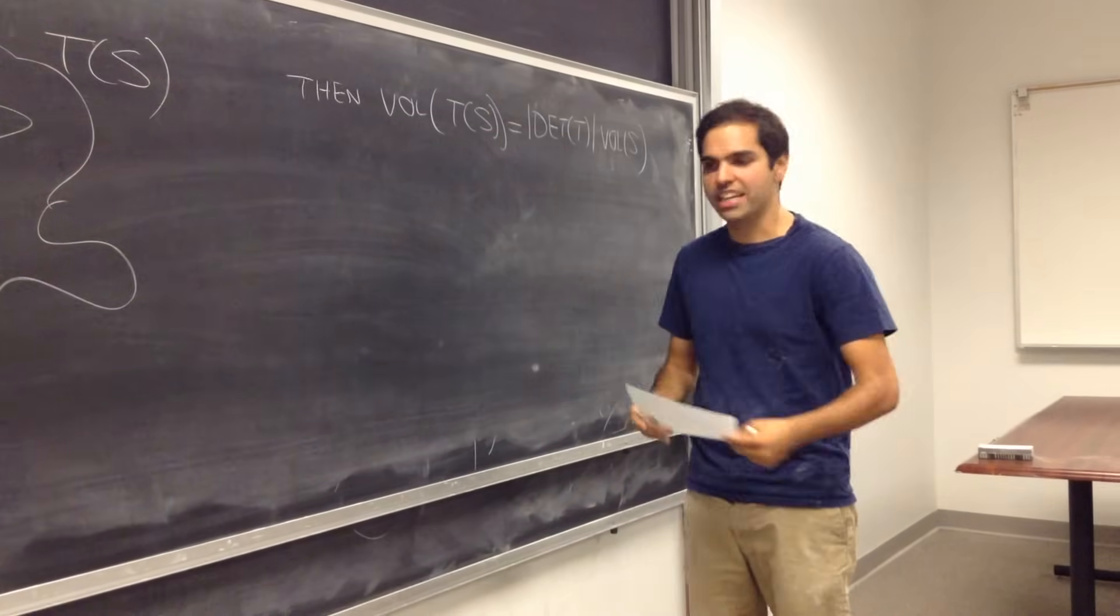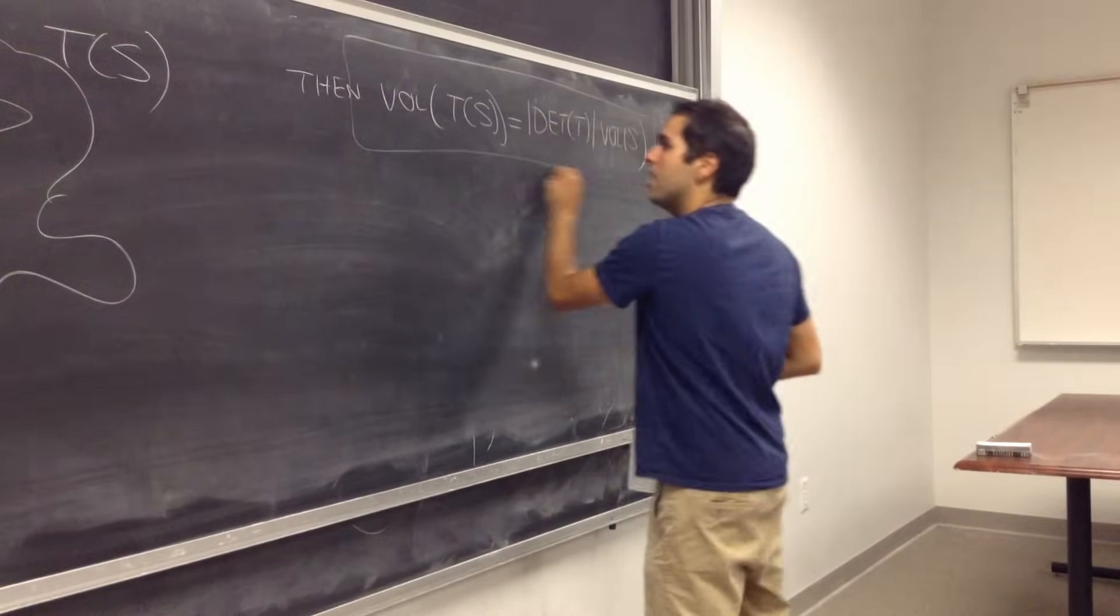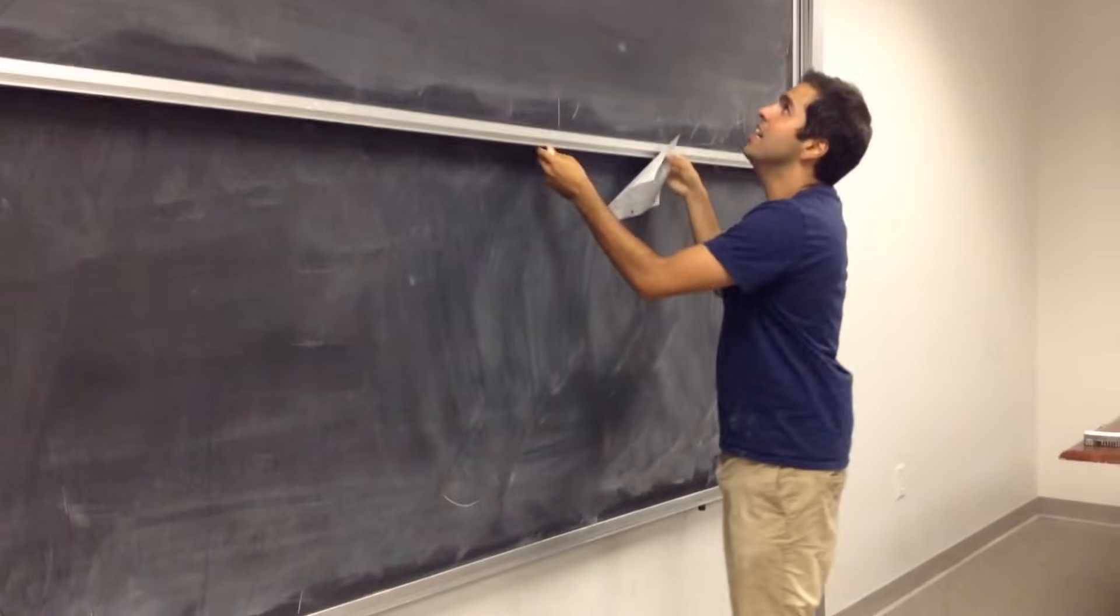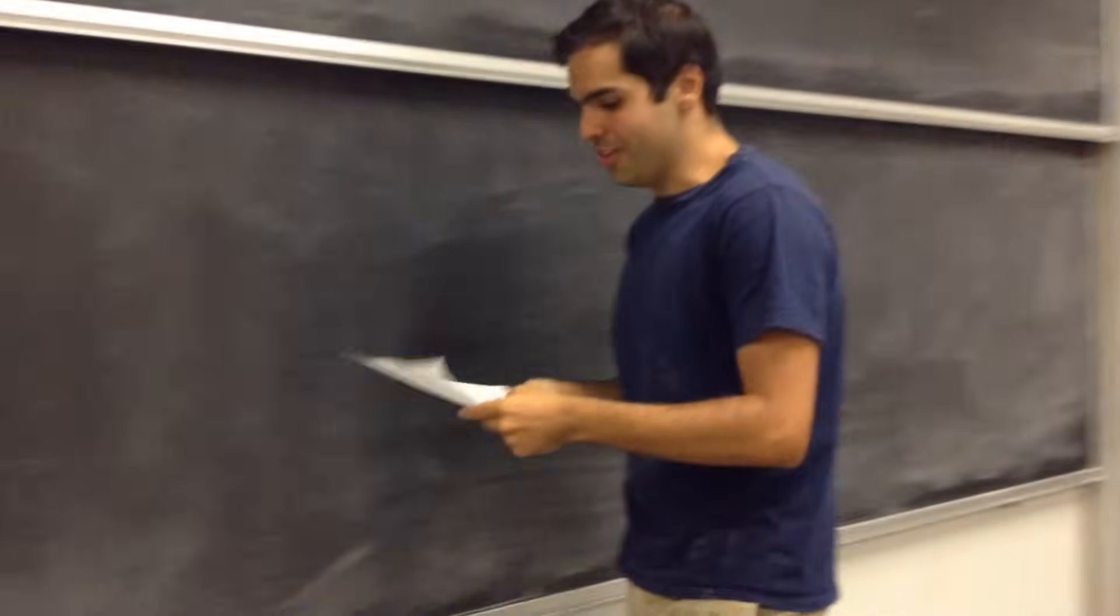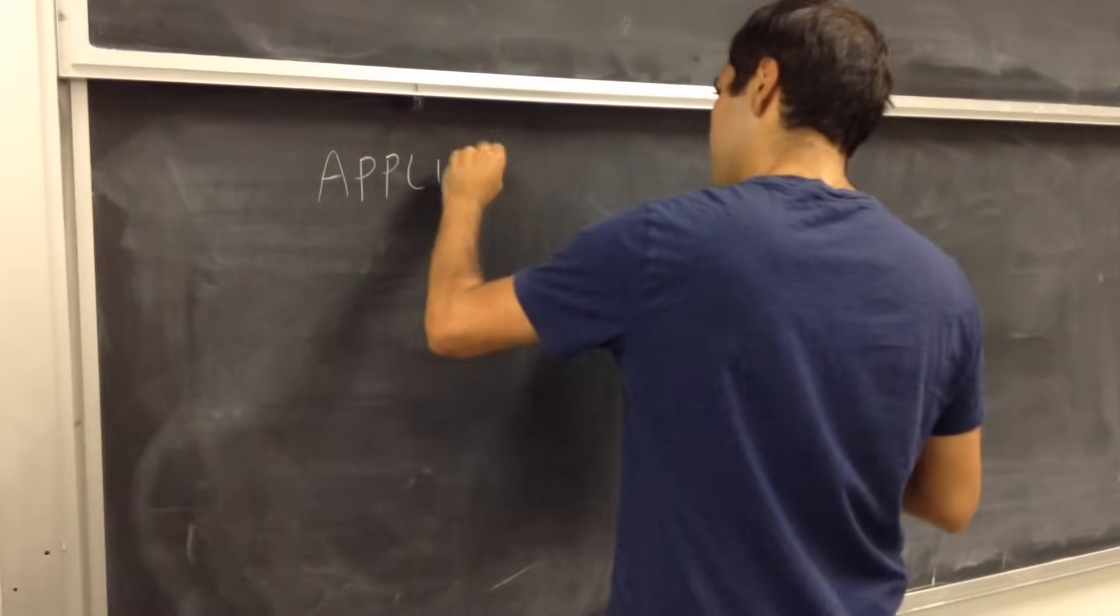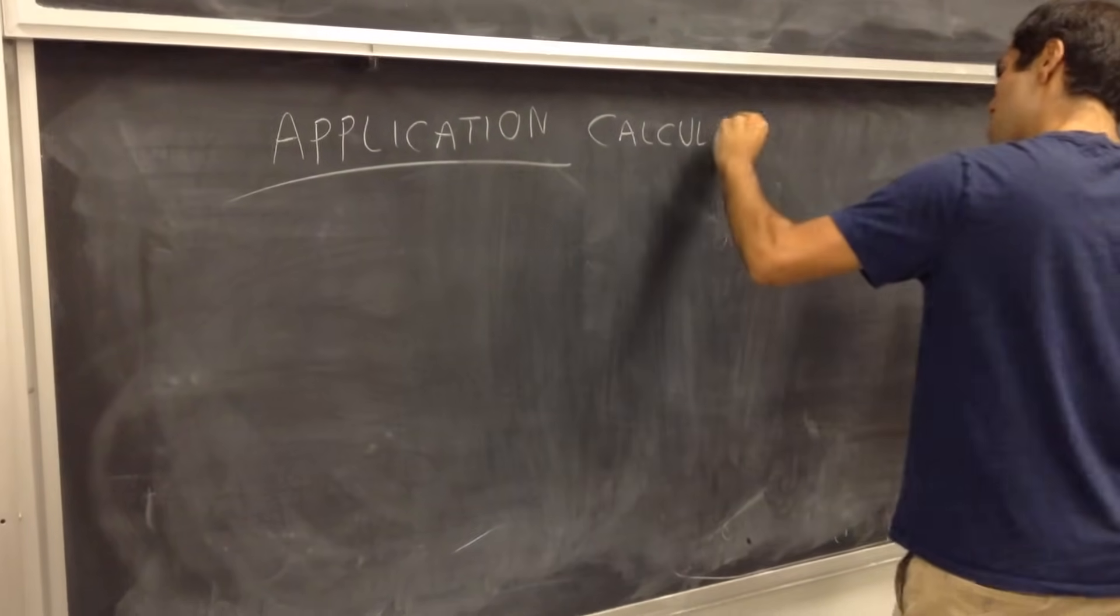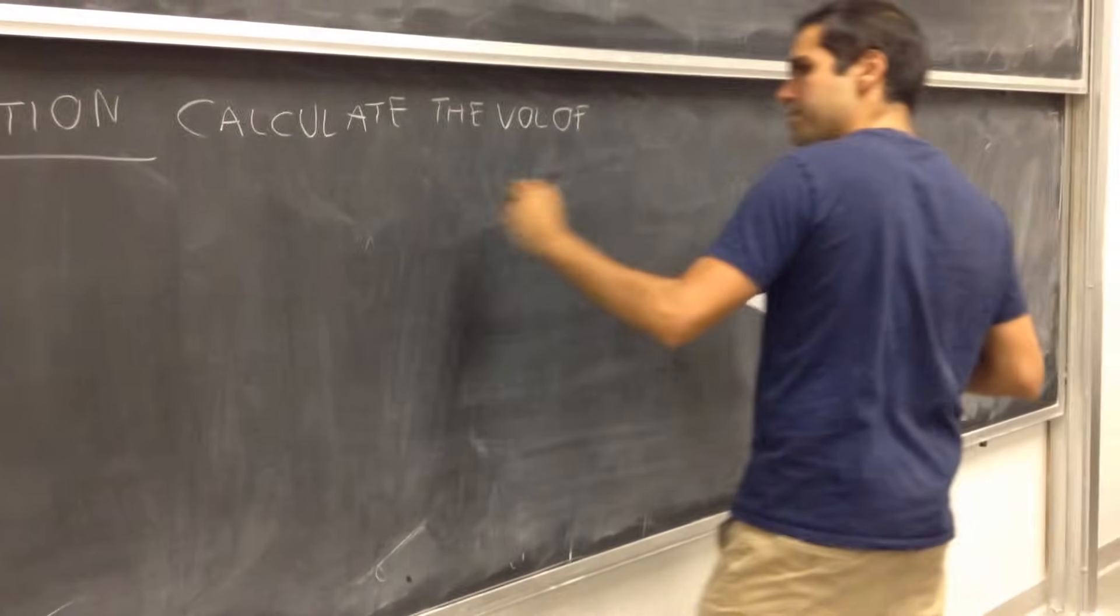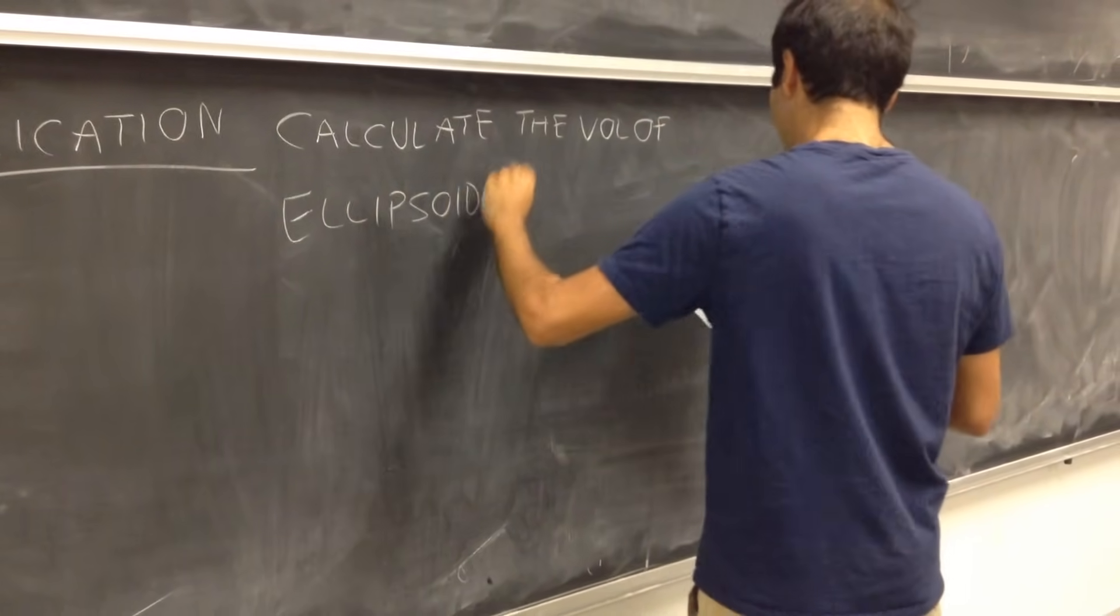In other words, the determinant, what it is, is the measure of the change of volume of an object when you apply the linear transformation to it. And that's the correct way of thinking of determinants. To apply this formula, let me show you a cool application, let me calculate the volume of an ellipsoid in a very quick way. Application: